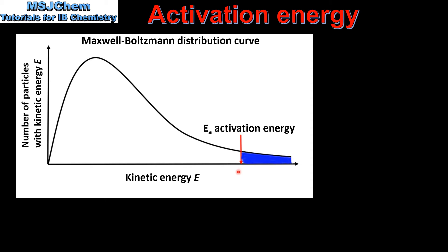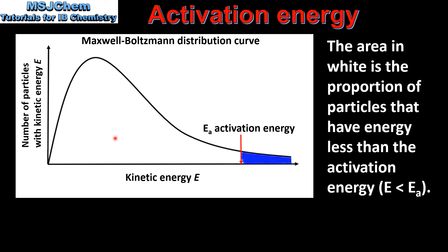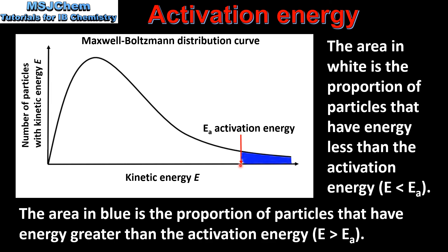On the x-axis we have this red arrow which indicates the activation energy for a reaction. The area in white is the proportion of particles that have energy less than the activation energy. Because they have energy less than the activation energy, these particles will be unable to have a successful collision. The area in blue is the proportion of particles that have energy greater than the activation energy.